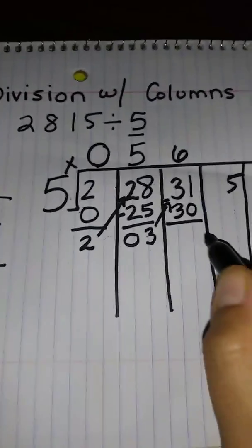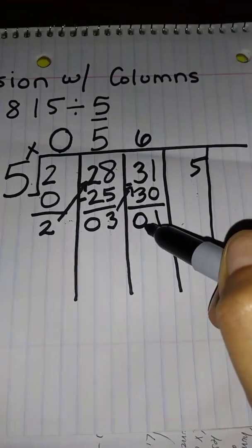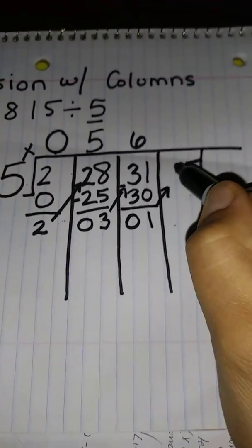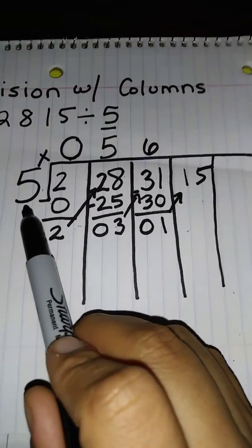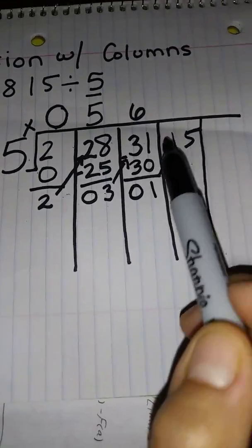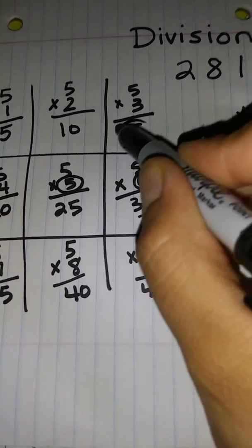So now 5 times 6 is 30. My difference is 1. Remember even though I have the 0 it doesn't matter. It's not worth anything there. So I'm going to carry over my 1. Now how many times can I multiply the number 5 into the number 15 without going over? So go back to your chart. Ah, perfectly, 15.